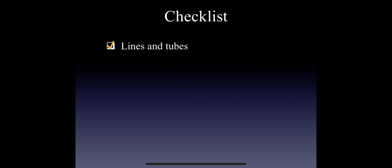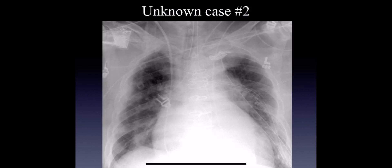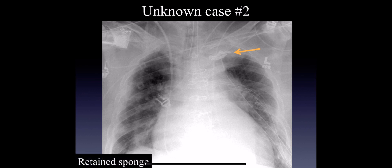So number one in the checklist: lines and tubes. Look at lines and tubes on every single case. This next patient has had a sternotomy, and they have an endotracheal tube, a nasogastric tube, a pulmonary artery catheter, chest tubes, clips, and some pulmonary edema. It's very easy to miss through all that noise this structure — the radiopaque marker of a sponge. So foreign bodies: I think radiologists are really excellent at subtracting out things that are overlying the patient, like EKG leads and big metal pads, and we're so good at it that sometimes we even subtract out things that aren't supposed to be there — foreign bodies that are in the patient. So in every post-operative case, I force myself to look very carefully for these because they can be very subtle.